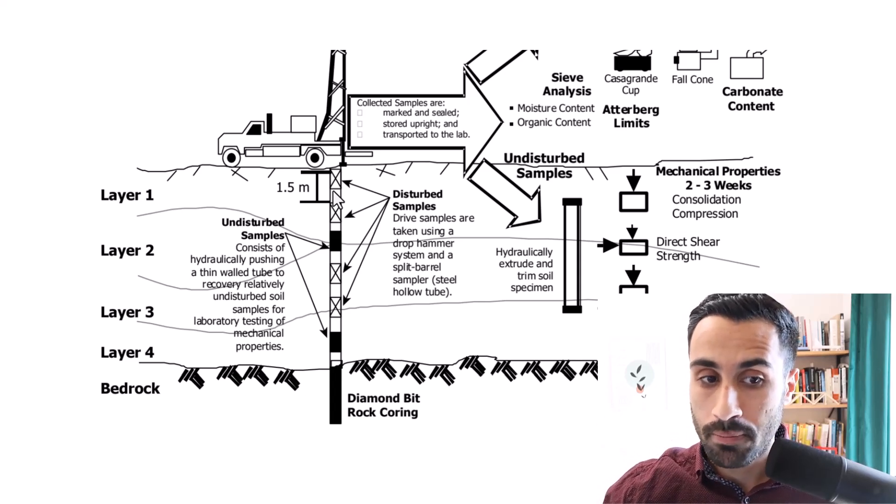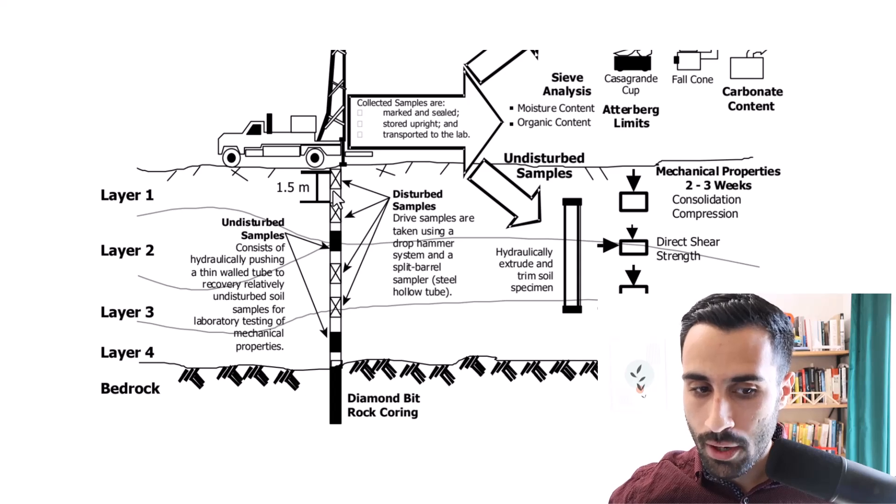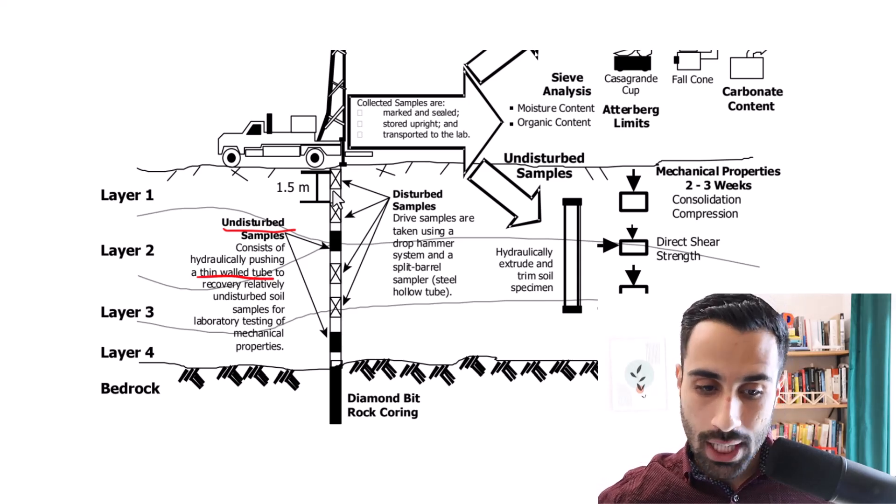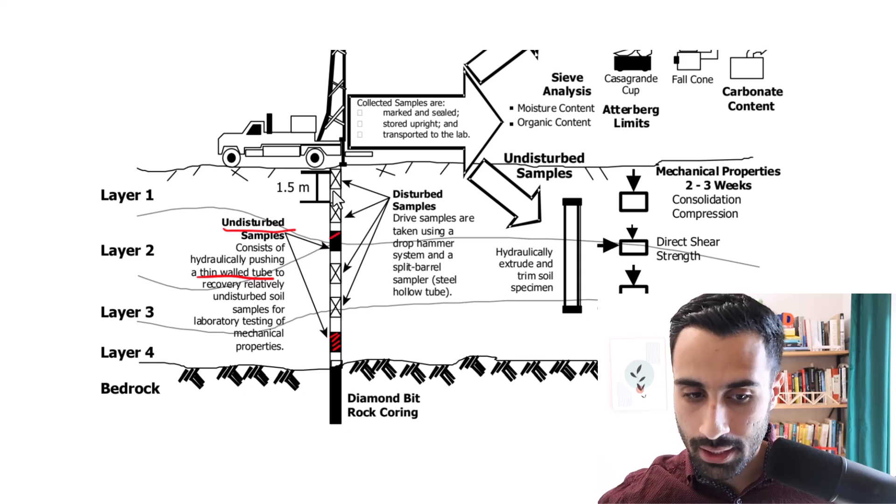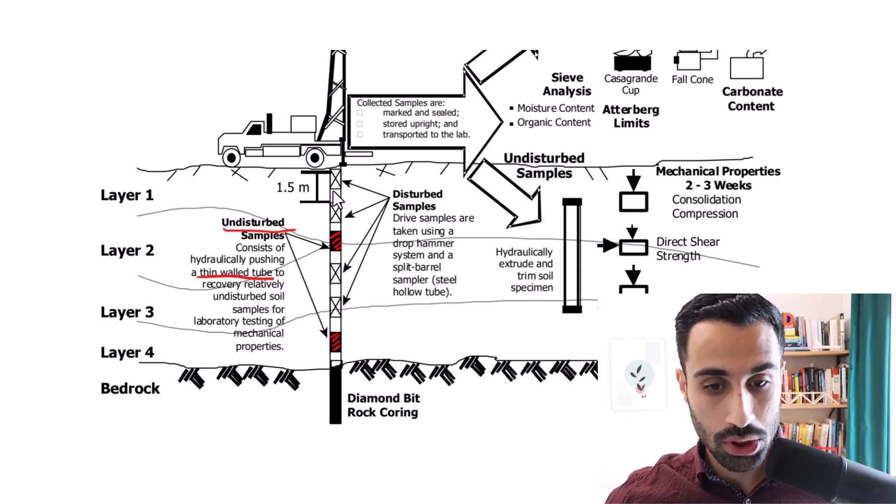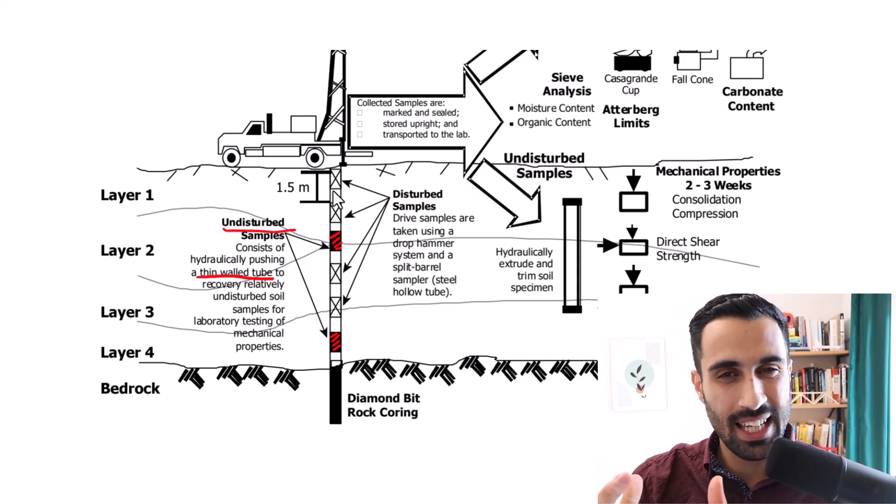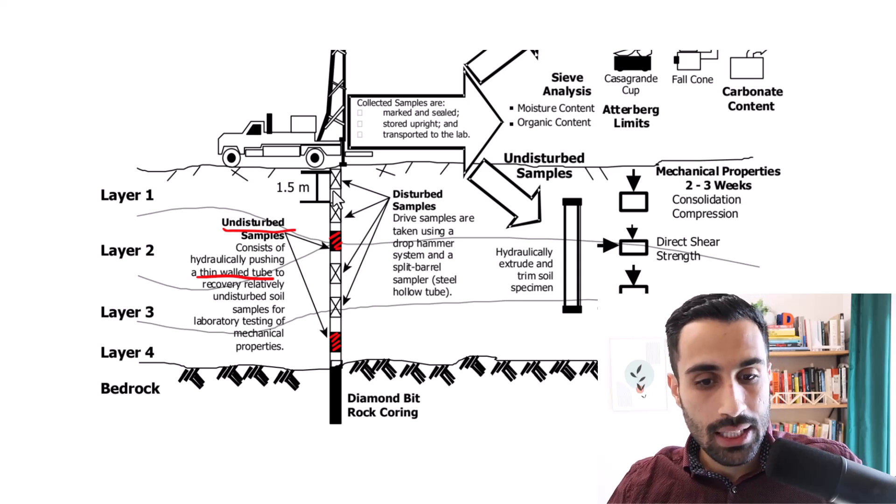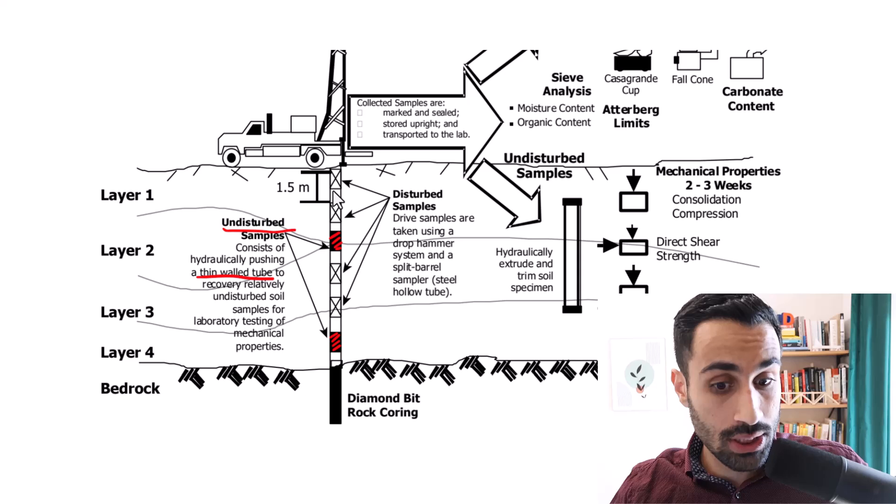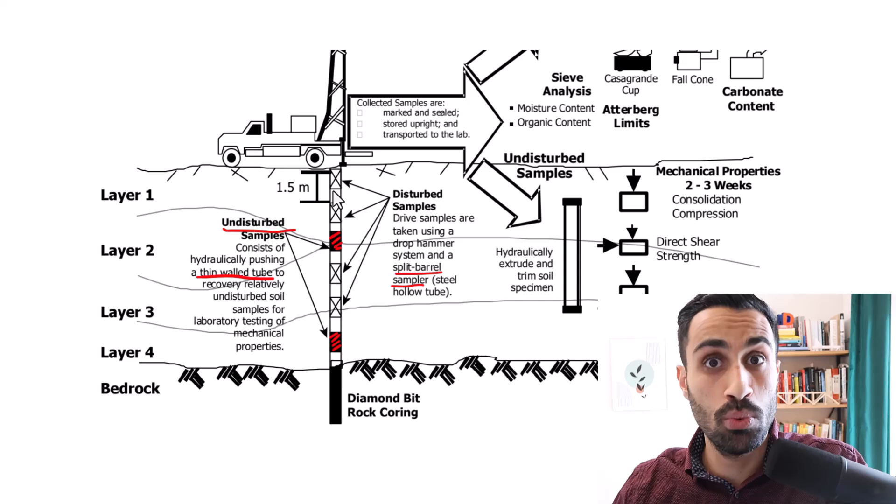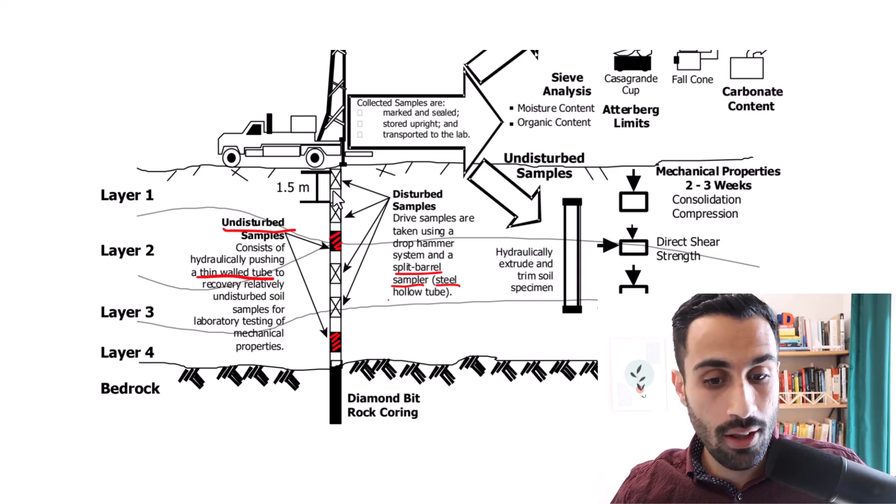So for the undisturbed sample we have that keyword along with the thin walled tube or thin walled Shelby tube. So that's the undisturbed. And in this one it's highlighted in black just to show us that. Then we have the disturbed samples. So these samples are disturbed, so they're not gonna keep that in-situ on-site condition. And these are going to be taken using a drop hammer system, classically the split barrel sampler, split spoon sampler, where we have a steel hollow tube.